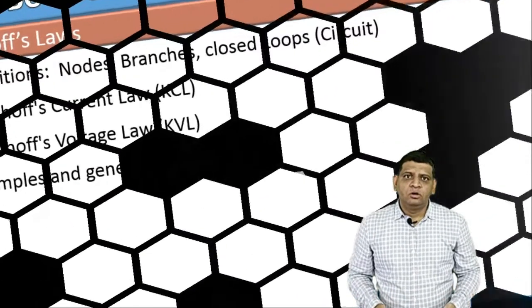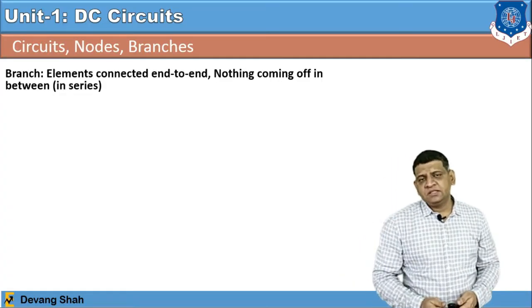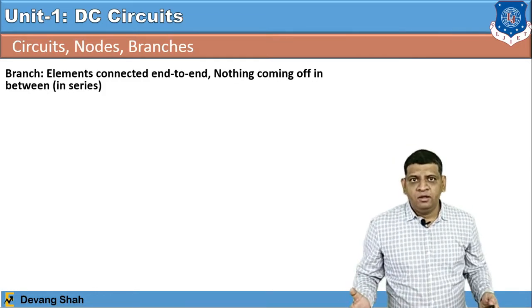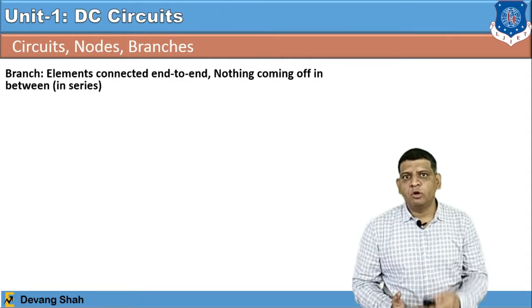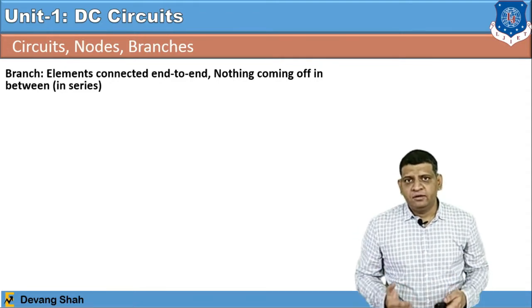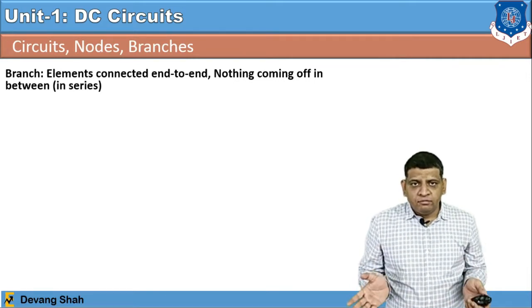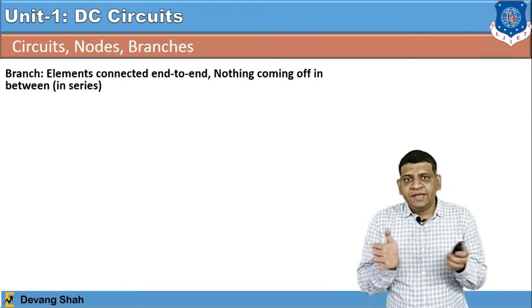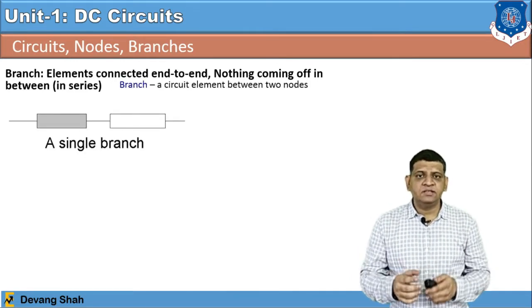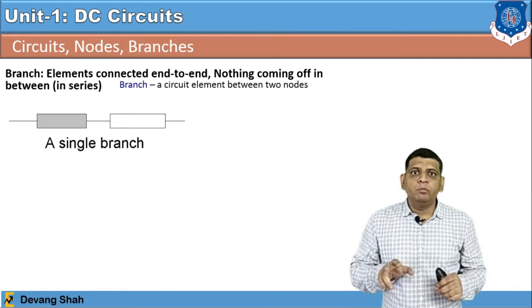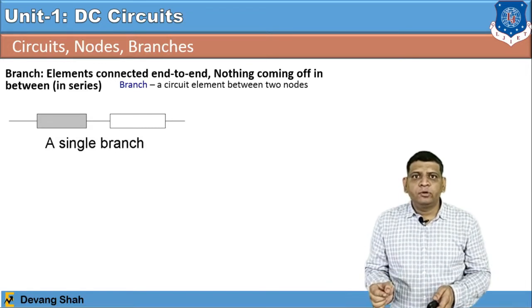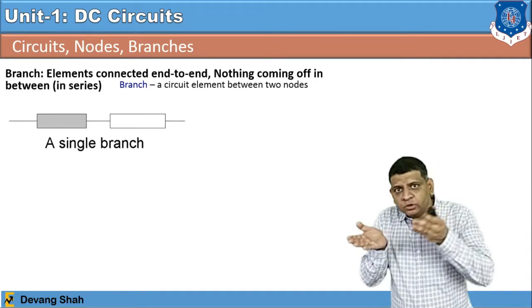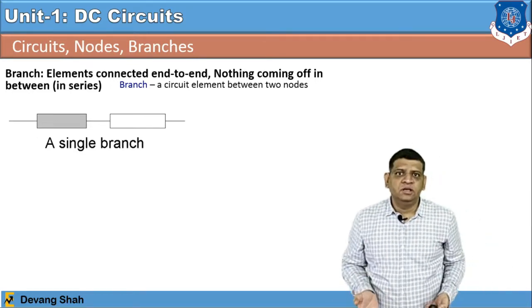Let's start with what is a branch. A branch is not a single wire — there is an incorporation of components inside any wire. One component connected end-to-end is considered as a branch. So in a circuit where you connect a component, you can see in a diagram there is a single branch where there is one wire and two components are connected in series. The end-to-end point of this component connected in a particular circuit is defined as a branch.